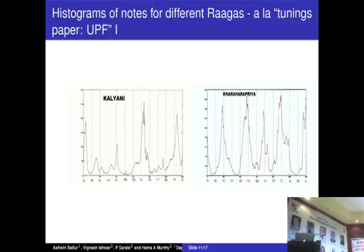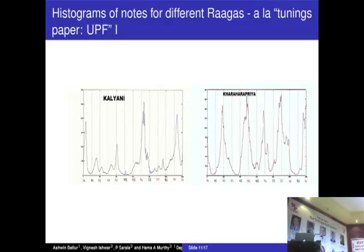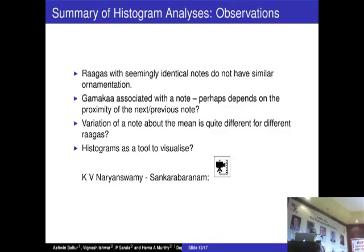Here is another example: Sriranjani and Hamsadhvani. Again the same thing — re and ga are very close in Sriranjani, but re and ga are separated in Hamsadhvani. The ga has a very small histogram height here relative to the equal-tempered scale. So the conclusion is that the tuning analysis has to be done based on the ga, and the summary of the histogram analysis is that one of the things we did was build the histogram progressively as we went along.